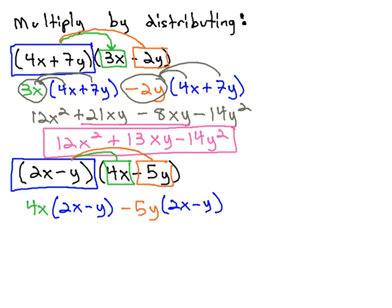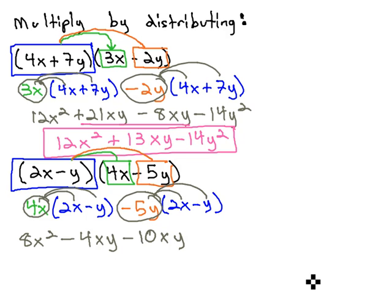Again, it is set up to distribute a second time. Distributing the 4x through, 4x times 2x is 8x². 4x times negative y is negative 4xy. Distribute the negative 5 through, negative 10xy, and negative 5y times negative y is positive 5y².